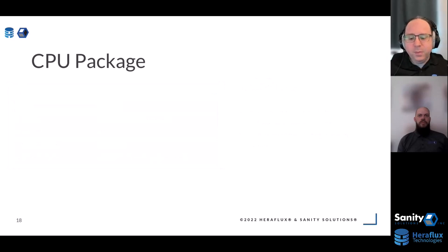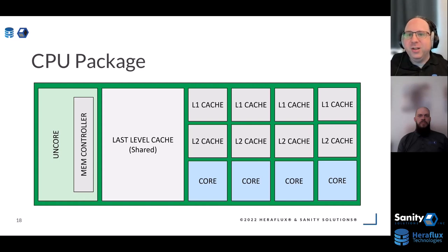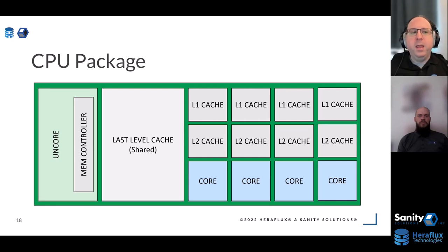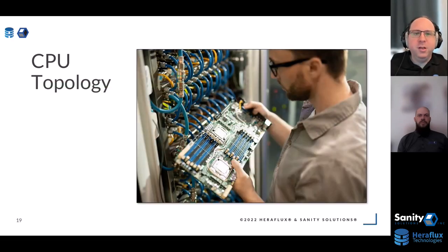When we say CPU, what we're talking about could be several things. The actual chip on the mainboard is called a CPU package. It's not just core speed — there are multiple processing cores, L1 and L2 cache, last-level cache (L3) shared between them, and a memory controller in the uncore. That memory controller is important for what comes up in a few minutes. A CPU package socket sits on the mainboard, and a typical server mainboard holds two CPU package sockets.